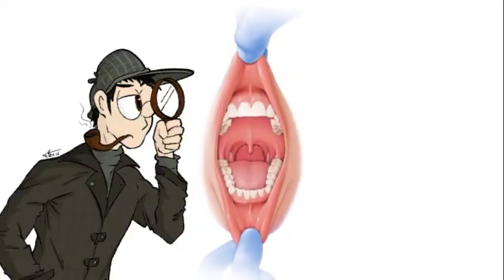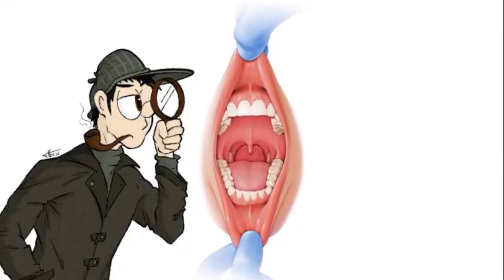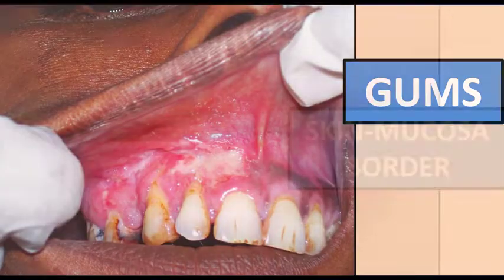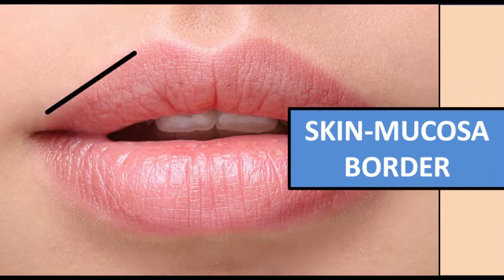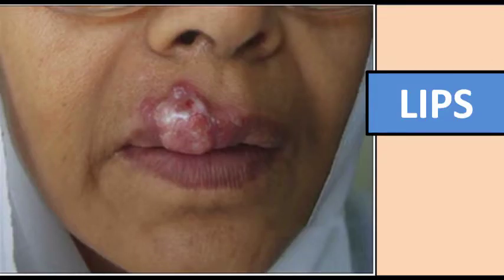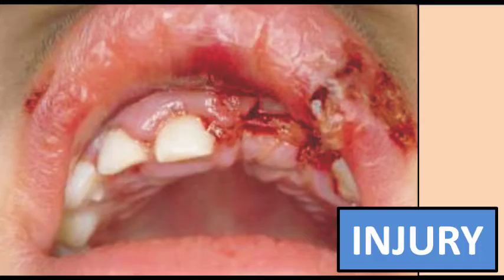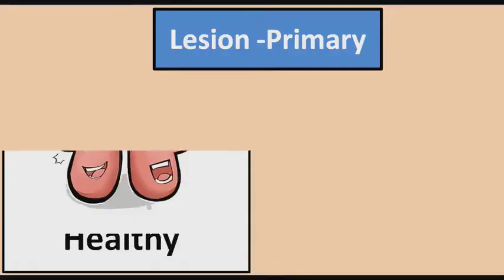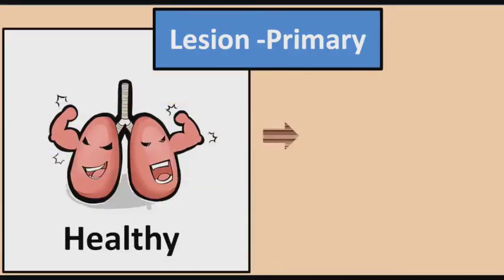Lesions of tuberculosis in the mouth are usually present on the gums, the border between the skin and the mucus membrane, the tongue, the lips, or in areas of injuries in the mouth. The primary type of lesions don't have a lung component.